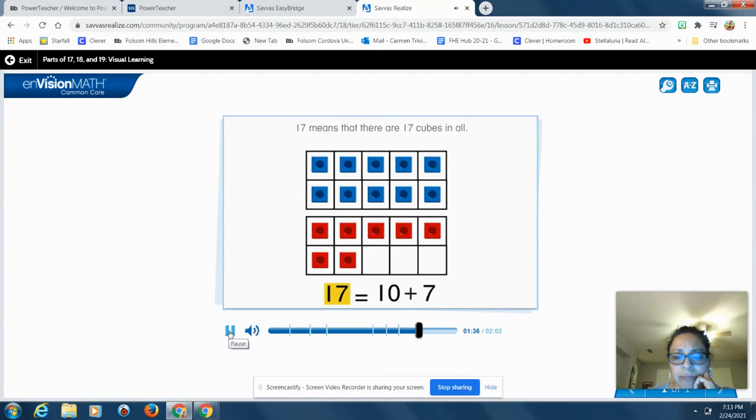What does the 17 represent? 17 means that there are 17 cubes in all. What does the 10 represent? The 10 shows that there are 10 cubes in the top 10 frame. What does the 7 represent? The 7 means that there are 7 cubes in the second 10 frame.